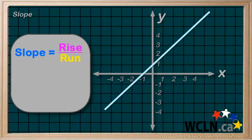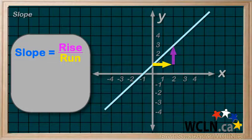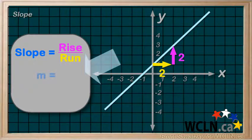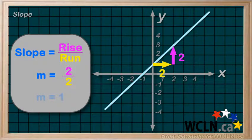For instance, for this line, let's draw in our run to the right, positive, and then our rise. The run is 2, going from 0 to 2, and the rise goes from 1 to 3, a rise of 2. So the slope would be rise over run, 2 over 2, and the slope would be 1.